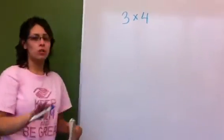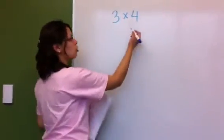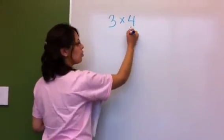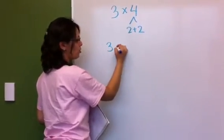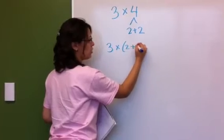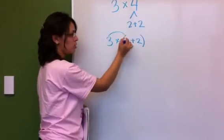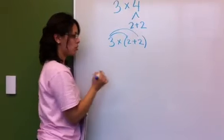You have 3 times 4, assuming you don't know the answer, so you will split up 4 into 2 plus 2. You then have 3 times 2 plus 2. You will distribute the 3 into the 2, and the 3 into the other 2,